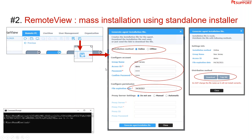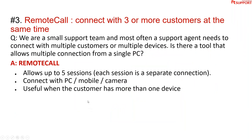If you're performing a network push, use the standard installation arguments through the command line — slash S, slash P, and slash QN.